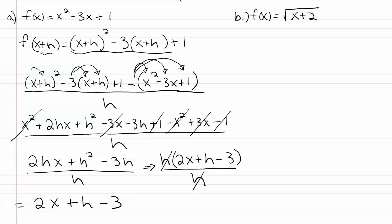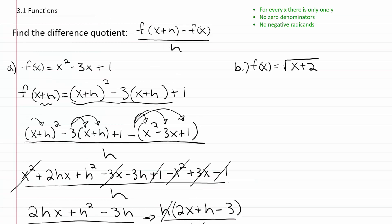Let's take a look at part b. For part b, we're going to do the same thing we did before — we're going to first evaluate or determine what f of x plus h would be. To do that, we're basically going to leave a space where the x used to be in the function and substitute in x plus h. Once we have that, we're going to fill in the difference quotient itself.